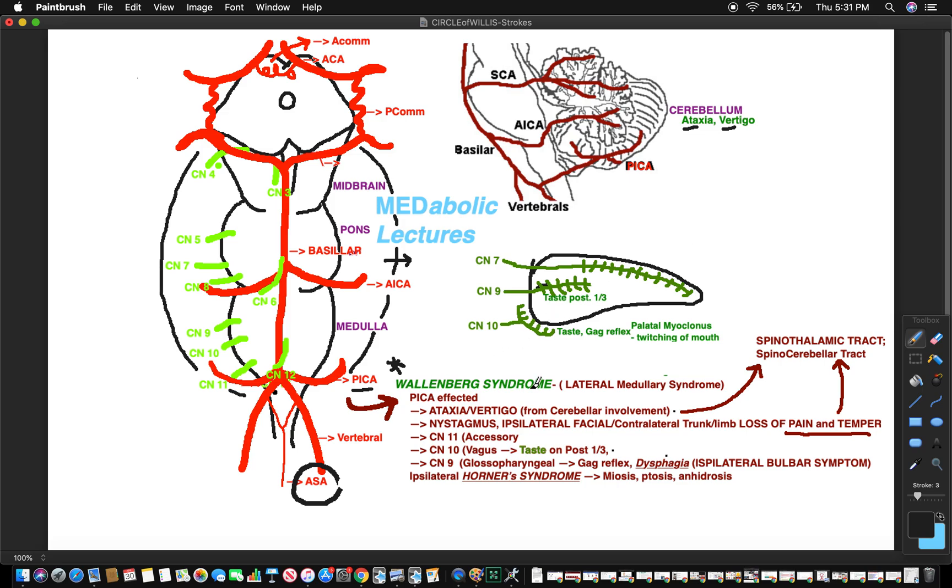Wallenberg syndrome - what is it? It's lateral medullary syndrome. It's the lateral side of the medulla that is involved and the lateral side has which nerves? Cranial nerve 9, cranial nerve 10, and cranial nerve 11. Don't forget that.